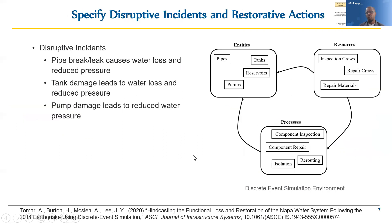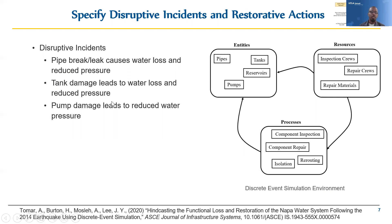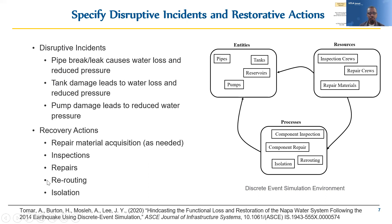Once you have that physical damage, you want to understand how it disrupts the functionality of individual components. Examples of disruptive incidents are given for pipes, tanks, and pumps, where damage to pipes could lead to loss of water and reduced pressure. Similarly for tanks and pumps, it's primarily reduced pressure.